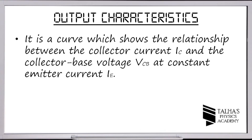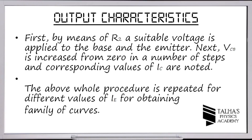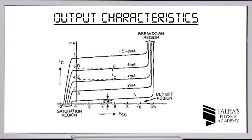Now let's look at the output characteristics. It is a curve showing the relationship between the collector current IC and the collector-base voltage VCB at constant emitter current IE. To determine this, by means of R2 a suitable voltage is applied to the base and emitter, then VCB is increased from zero in a number of steps and the corresponding values of IC are noted. This procedure is repeated for different values of emitter current to obtain a family of curves.